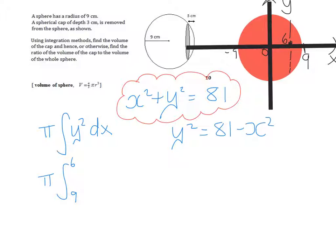And I'm integrating 81 minus x squared, which is going to give me 81x minus x cubed over 3, which is going to give me between the limits of 6 and 9.